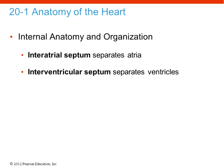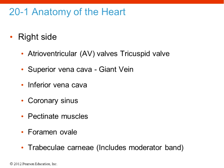Looking at the internal anatomy and organization of the heart: between the left and right atria we have the interatrial septum, and between the left and right ventricle we have the interventricular septum, which we previously saw on the superficial anatomy slides.